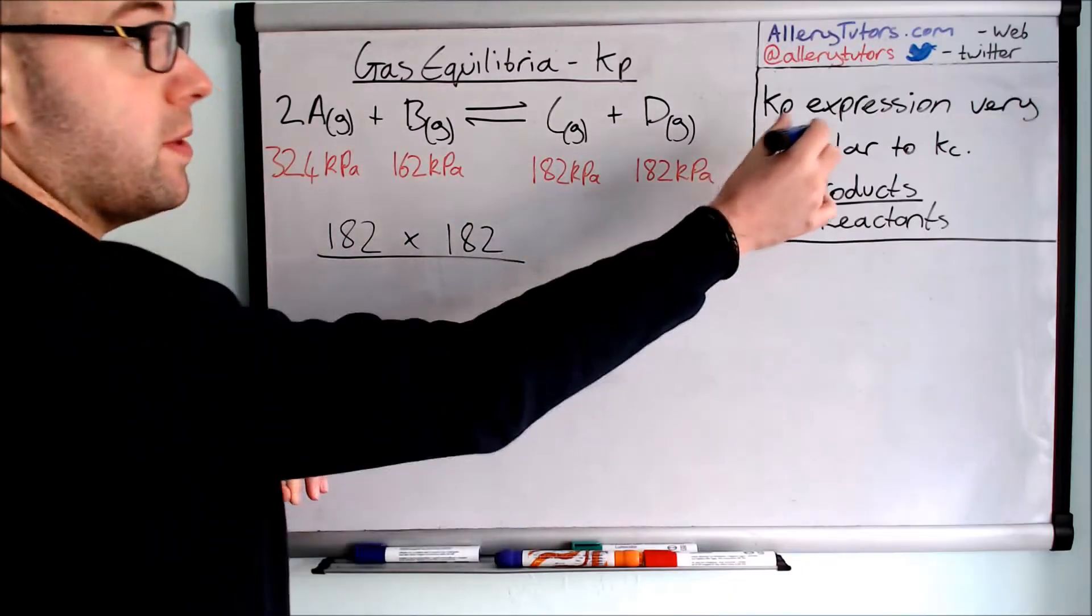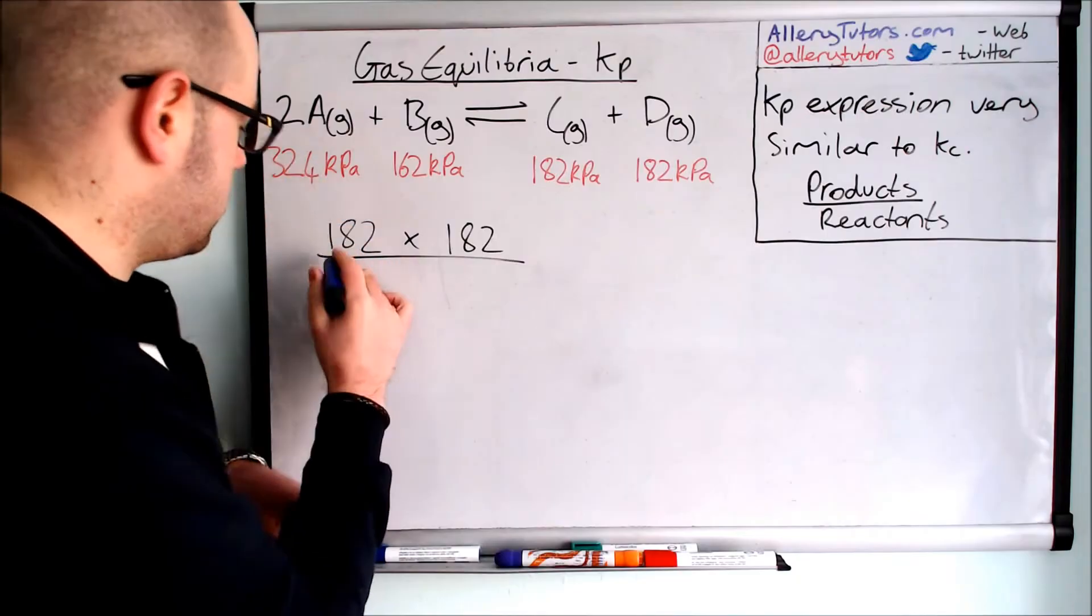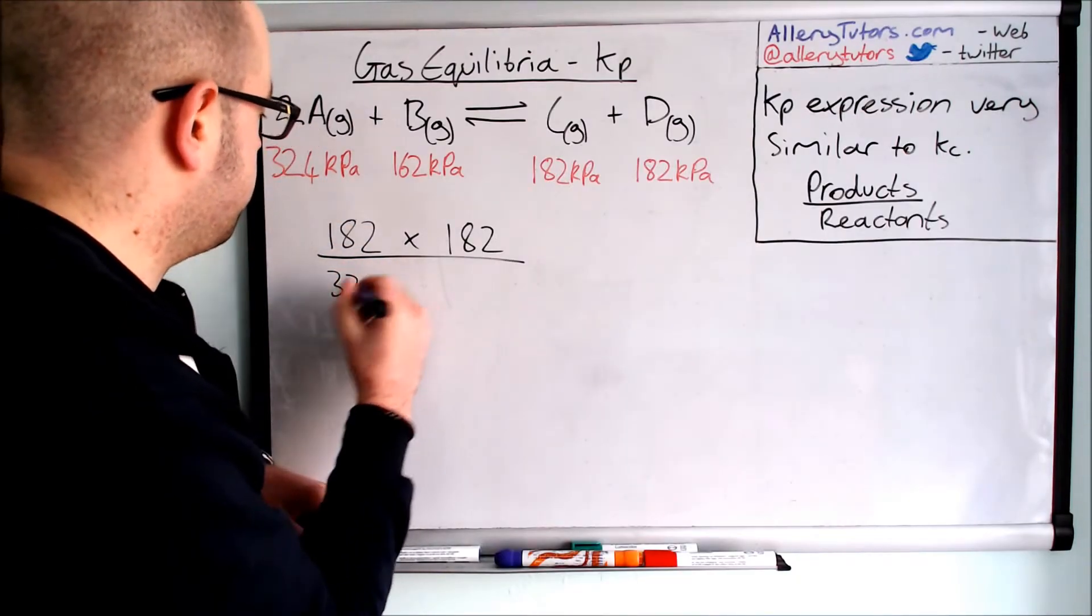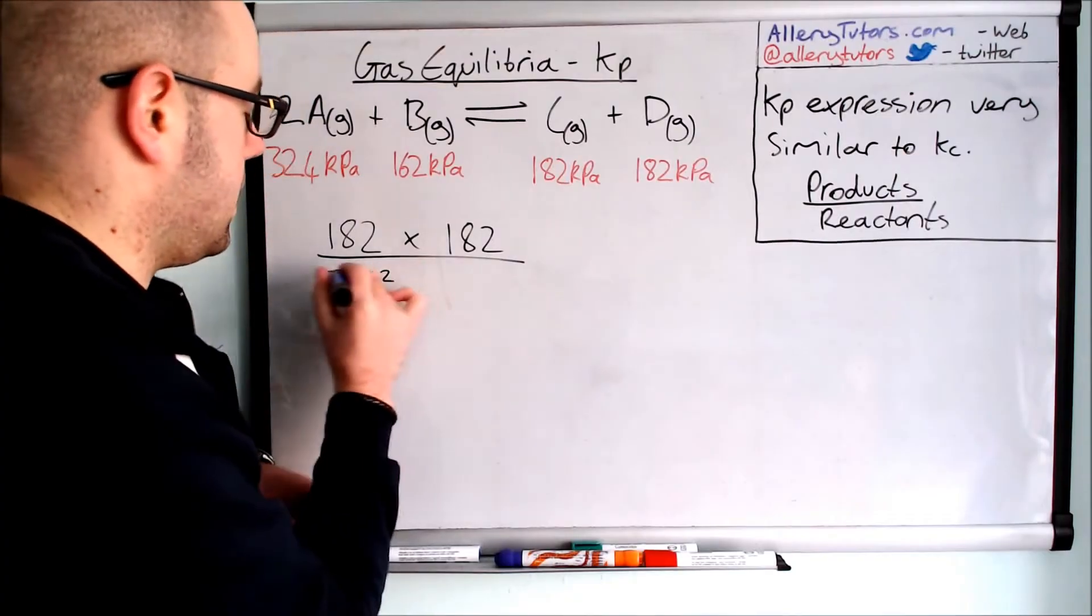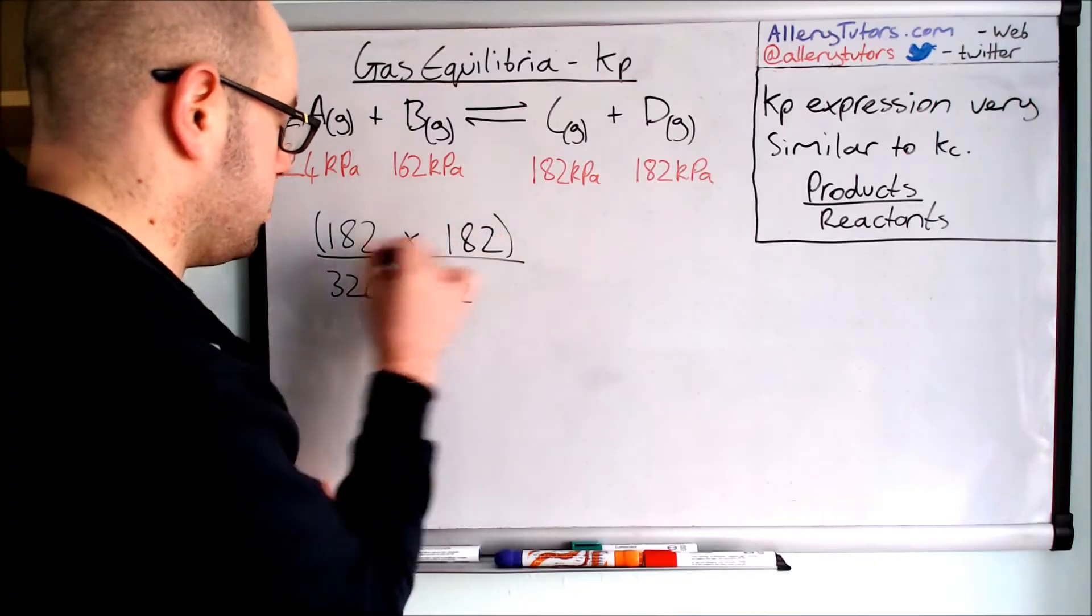So just like when you're working out KC, whatever the number of moles is on the front you actually have to square it. So this is going to be 324 squared and we're going to multiply that by 162. So all these are going to be in brackets.